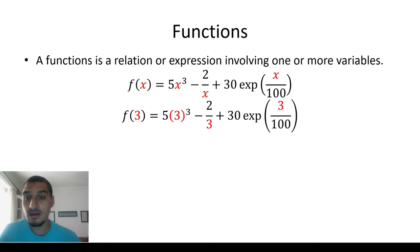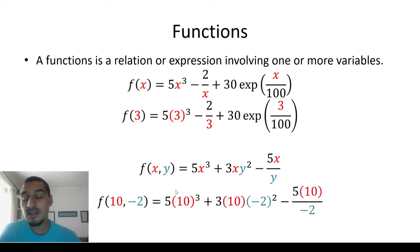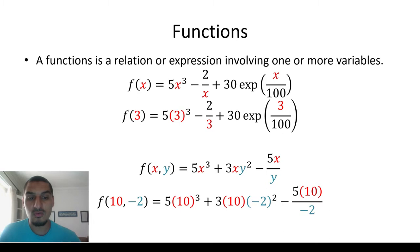A function can also depend on more than one variable. For example, g(x, y) = 5x³ + 3xy² − 5x/y. In this case I have to provide two values — one for x and one for y — such as 10 for x and −2 for y. This is simply what we mean by a function.